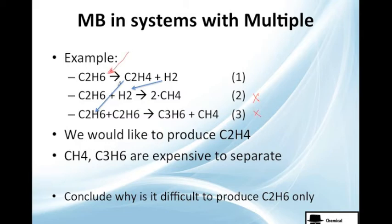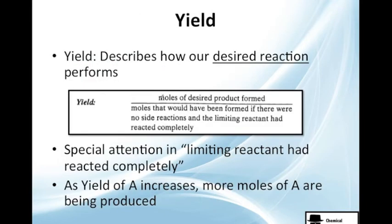Which of course will be this one because it's the only one. If we react everything to this equation, how much do we actually produce? And the thing you want to know here is the yield of A should increase because the more moles of A you produce.